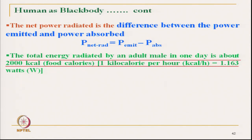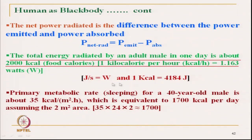Let us see the calculation. The primary metabolic rate when sleeping — for a typical healthy 40-year-old male — is about 35 kilocalories per square meter per hour, which is equivalent to 1700 kilocalories per day. We get this value because: 35 kcal/m²/hr multiplied by 24 hours multiplied by 2 square meters (assumed body surface area) gives approximately 1700 kilocalories per day.